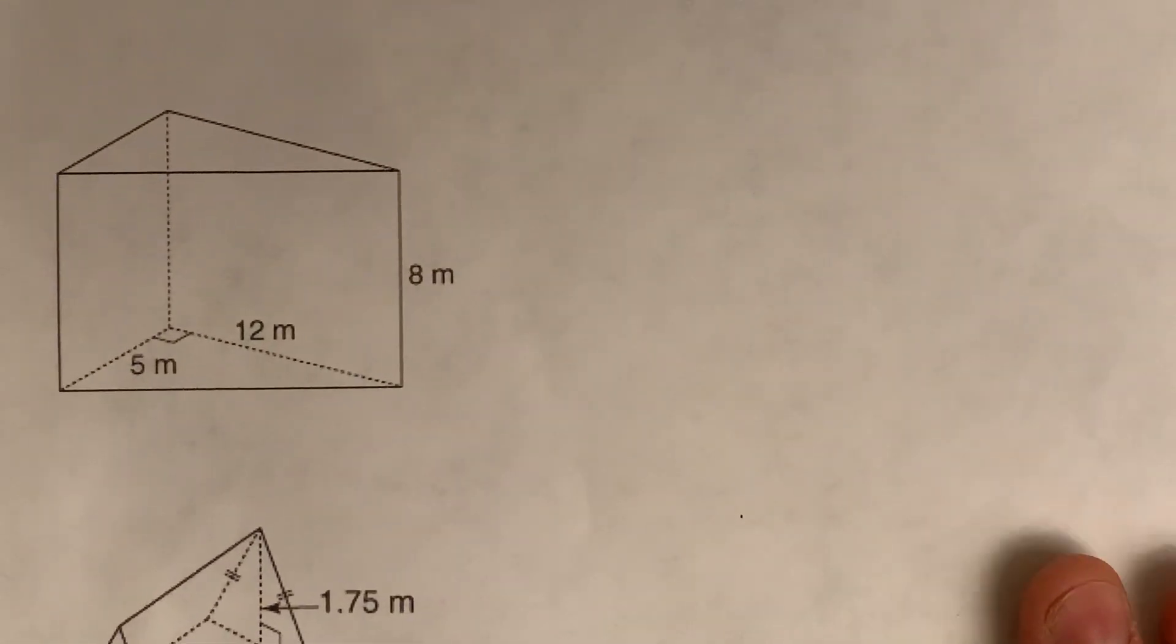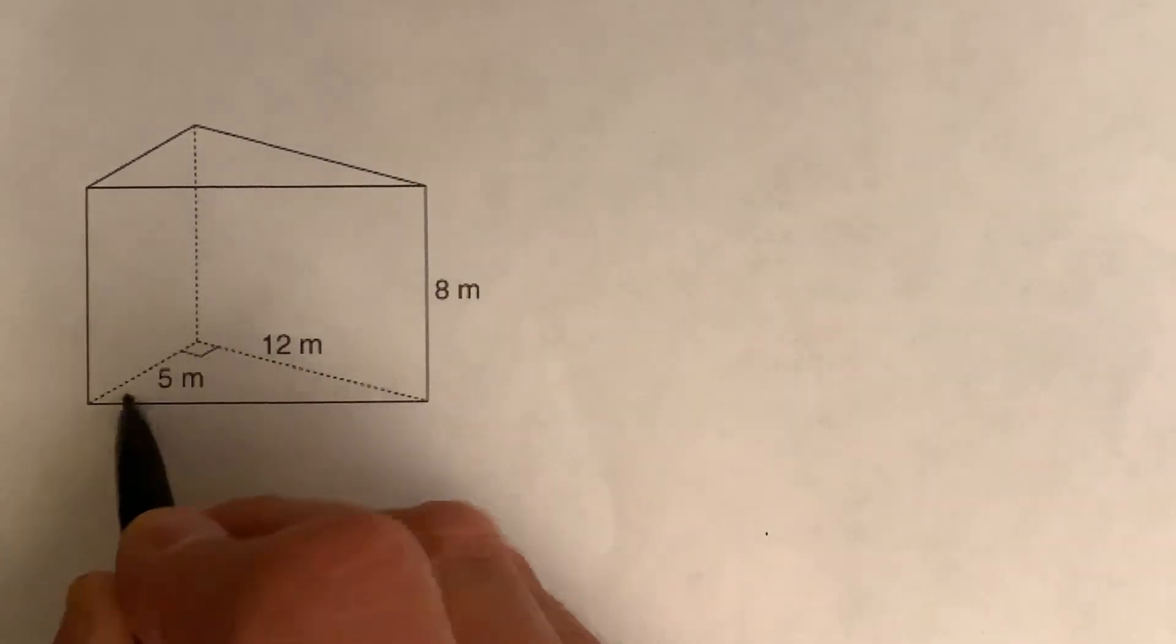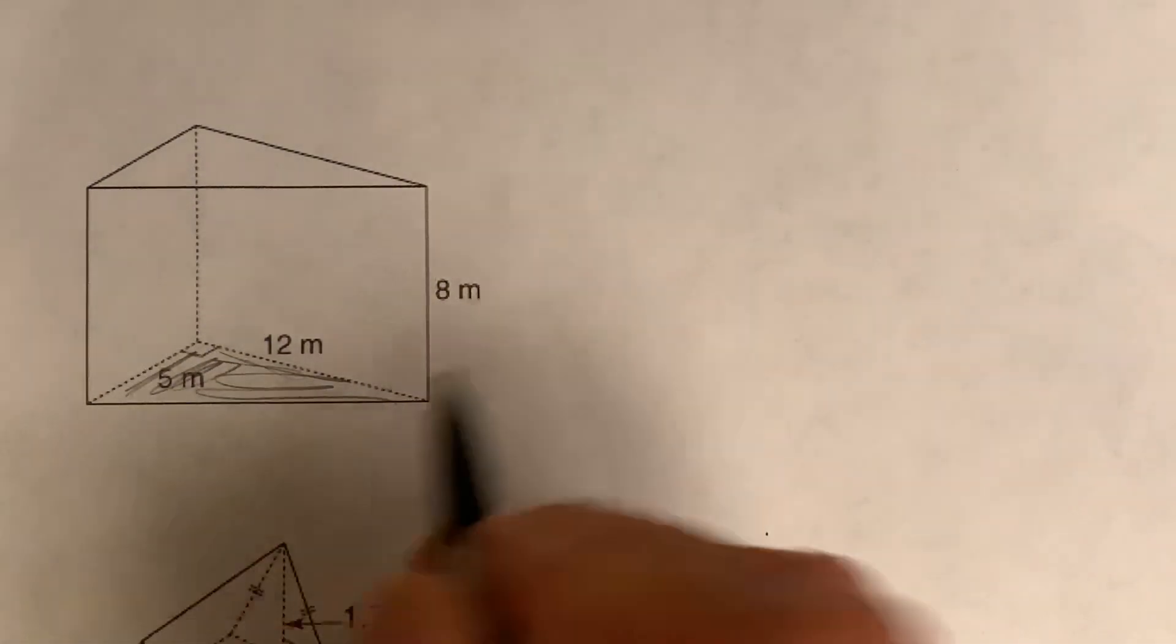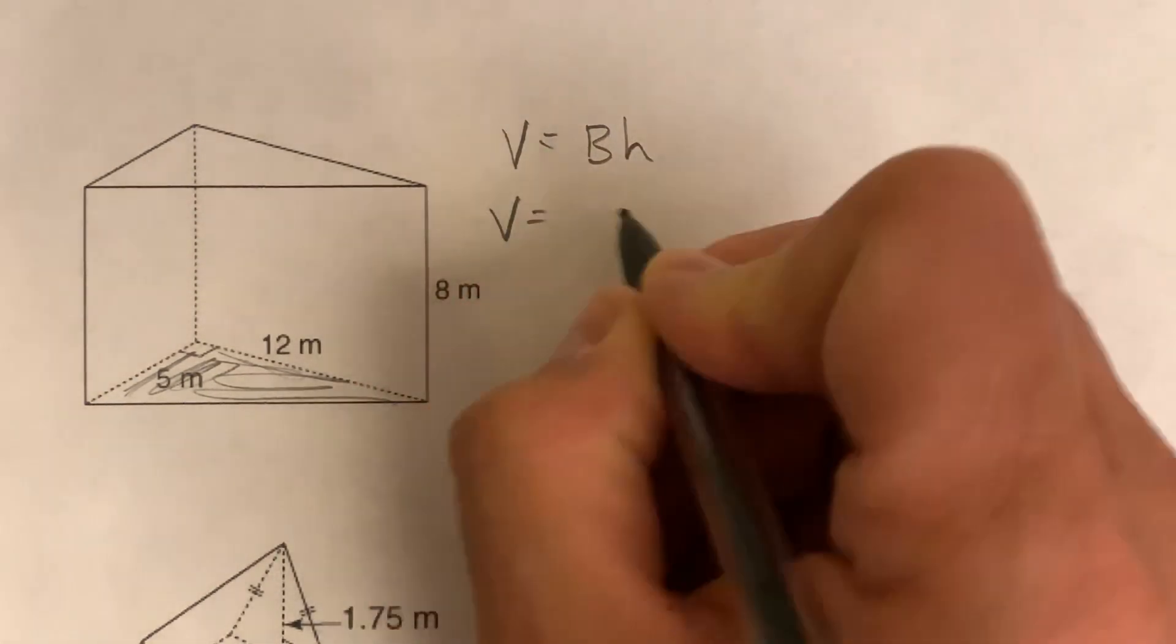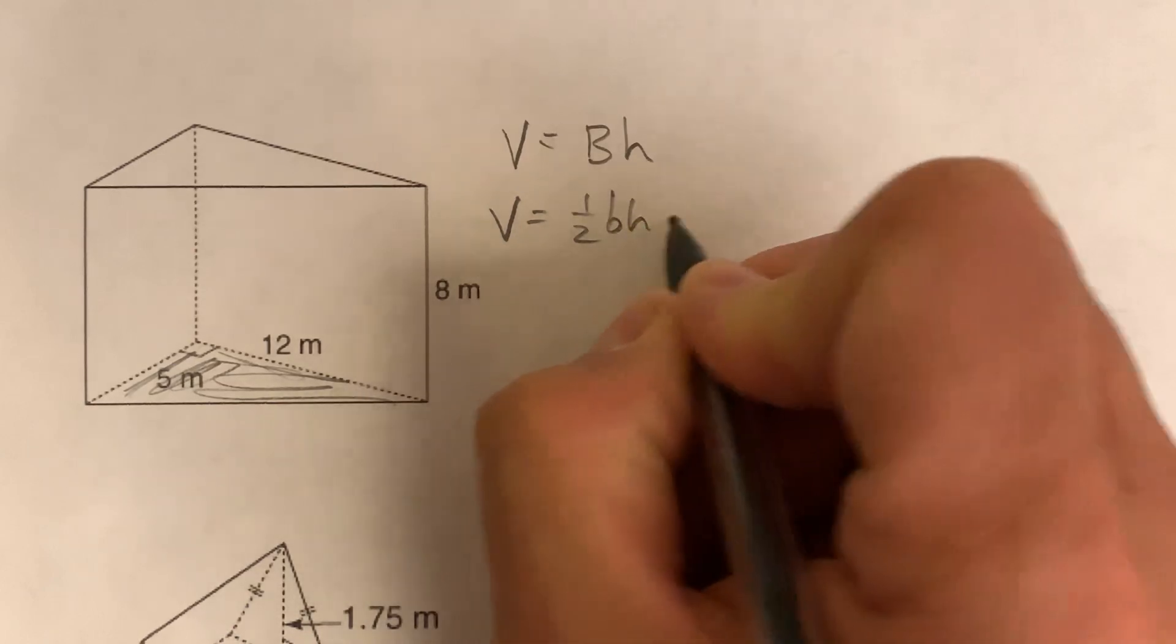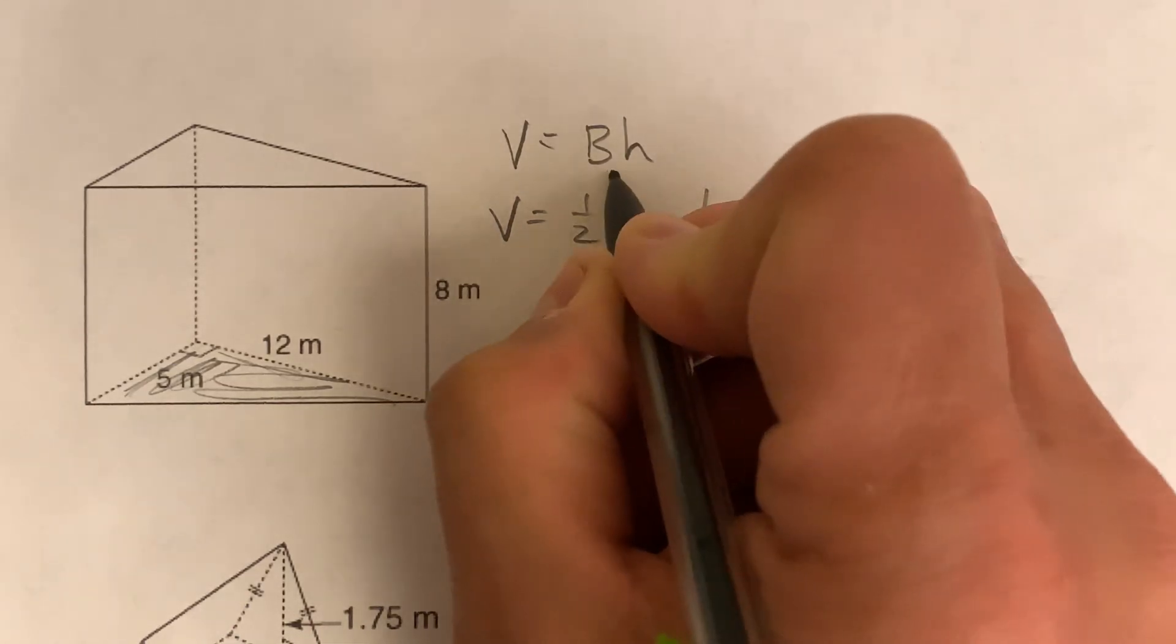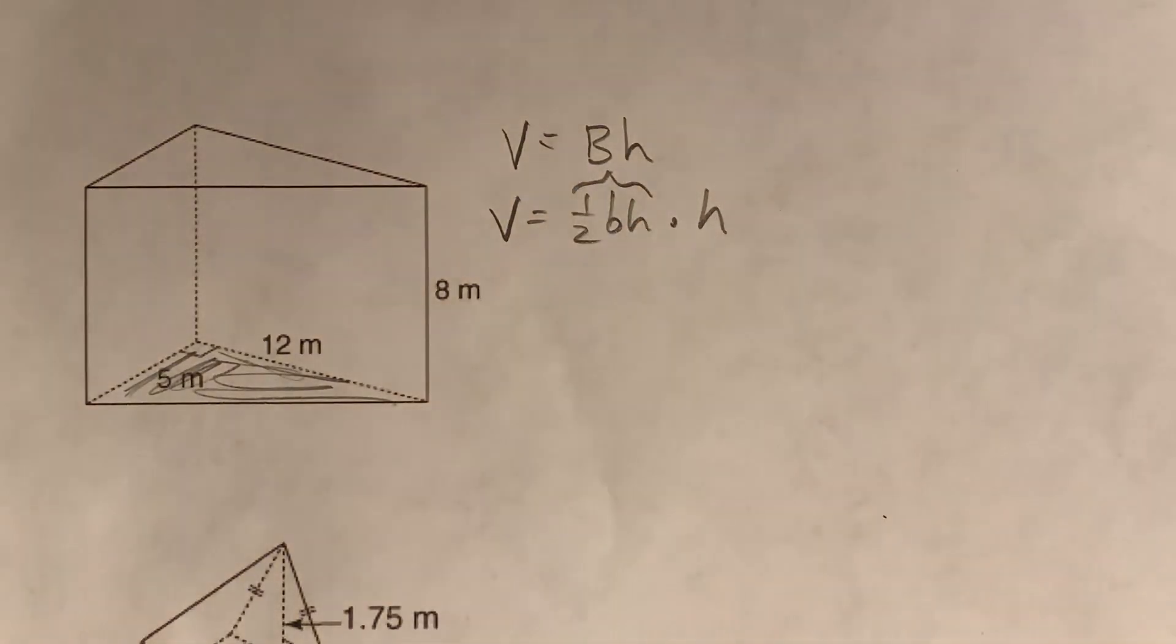Let's go ahead and try another one now. Our base looks like it's sitting on the triangle again. So the bottom is the triangle. Kind of lightly shade that in as our base. Get our formula in there. Base area times height. I'm going to put in the one half the base times the height again because that's my triangular base right there.